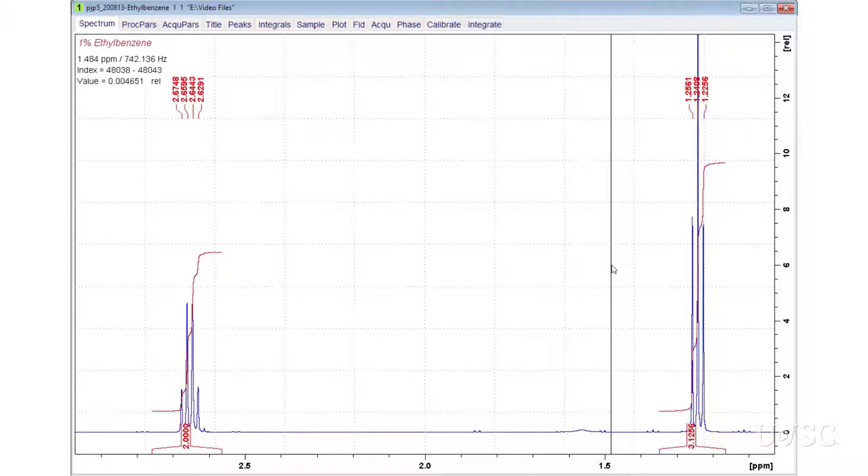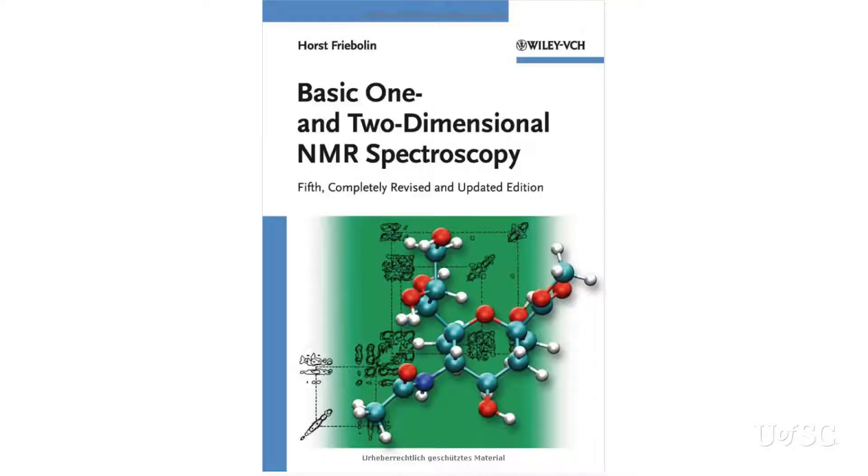The spin-spin coupling is exploited for many advanced NMR techniques, but even one-dimensional spectra can provide much information. For a good primer on spin-spin coupling, check out from the university's library, Basic 1 and 2-Dimensional NMR Spectroscopy by Horst Fribelen. We have also included links to a couple of useful webpages in this video's description.